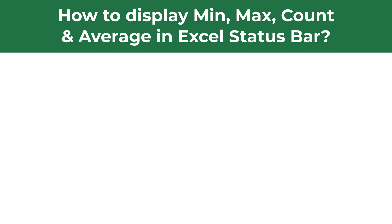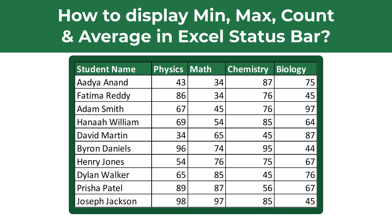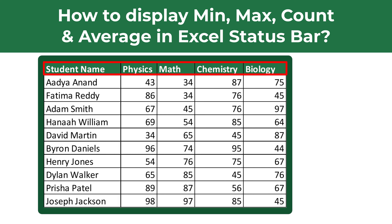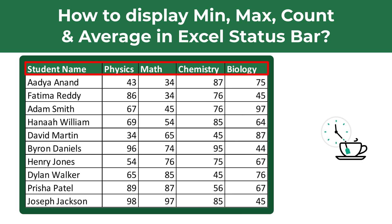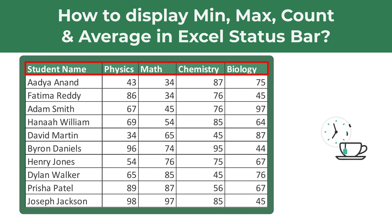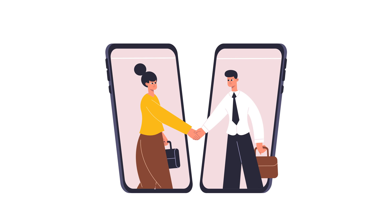Very frequently on the test you get questions about the usage of formulas in Excel. Sometimes you get questions on how to display data in the status bar. For example: how to display minimum, maximum, count, and average in the Excel status bar. You are presented with a data set of student grades showing student names and their grades in physics, math, chemistry, and biology. Give yourself a little time to see if you can come up with the solution.